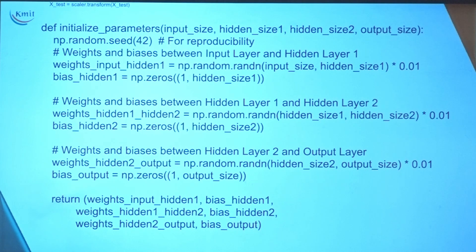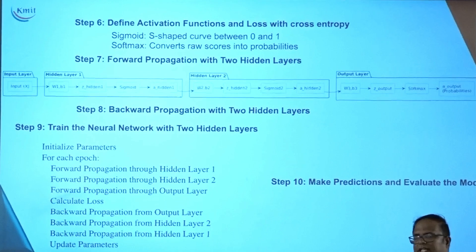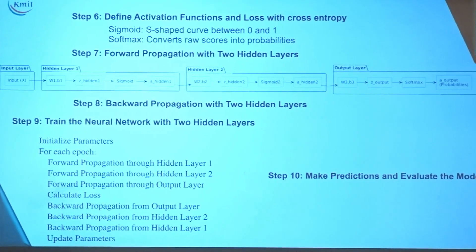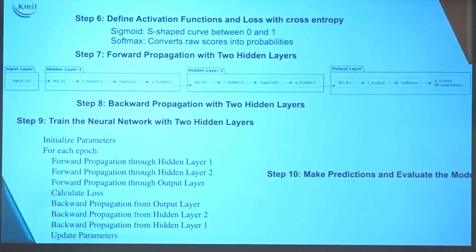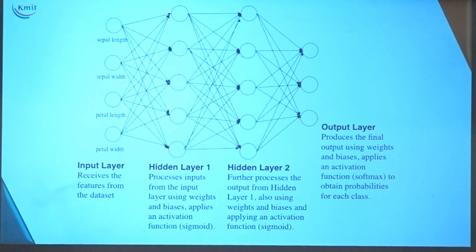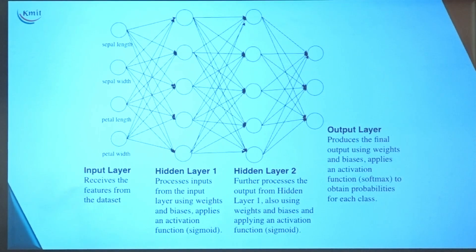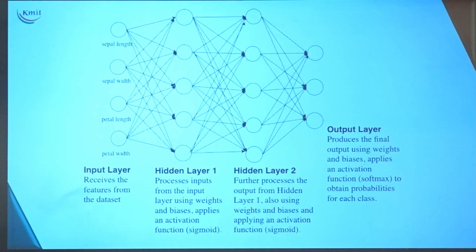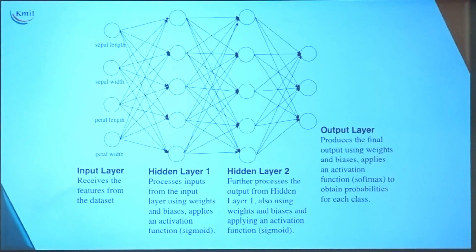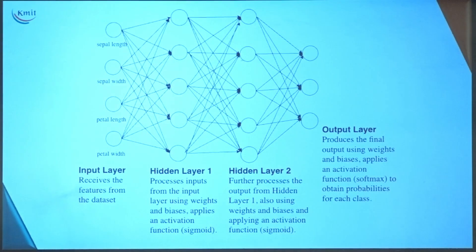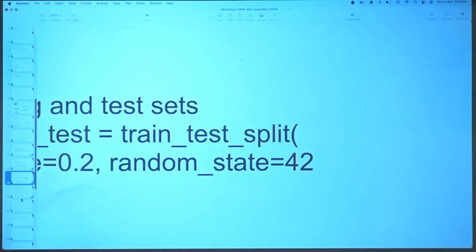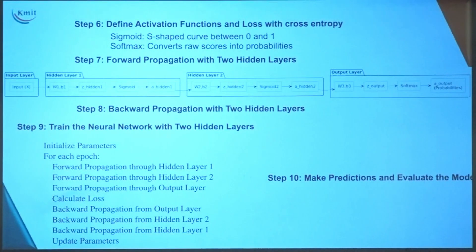Today we are going to do step 6: defining the activation function. In the hidden layers we are using sigmoid, whereas in the output layer we are using softmax — a combination of two activation functions to improve accuracy. For hidden layers 1 and 2, we use sigmoid; for the output layer, we use softmax.